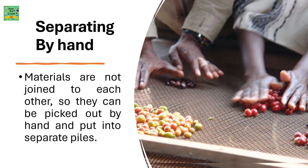The first method for separating mixtures physically is by separating it by hand. Materials are not joined to each other, so they can be picked out by hand and put into separate piles.